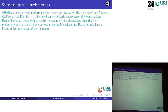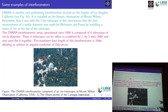CHARA is another very performing interferometer, installed on the historic observatory of Mount Wilson, where Michelson and Pease mounted the 7-meter beam on the Hooker telescope. CHARA consists of six telescopes. It works in the visible, whereas the VLTI works in the infrared — typically 2.2 microns. Since resolution is lambda/B, and the wavelength at visible is much shorter, CHARA achieves better angular resolution. The baseline can reach almost 400 meters.